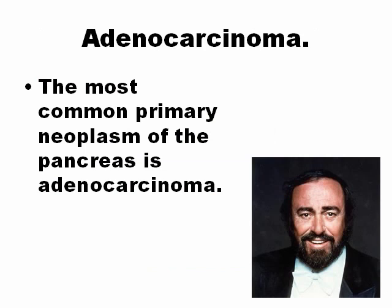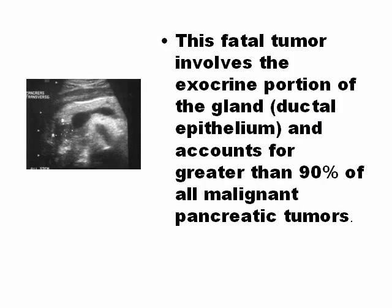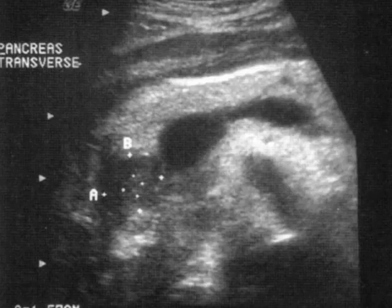Adenocarcinoma of the pancreas is the most important disease of the pancreas. Students of ultrasound must know how to recognize it because it is very important and very dangerous. It is the most common primary neoplasm of the pancreas. Pavarotti, the famous singer, died of pancreatic adenocarcinoma. Carcinoma of the head of the pancreas is a very dangerous tumor of the exocrine part of the pancreas. The sonographic appearance is a heterogeneous hypoechoic structure in the head of the pancreas.